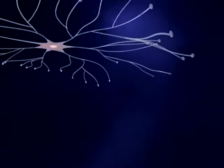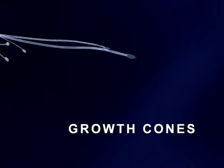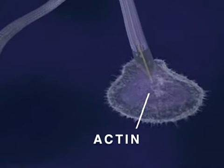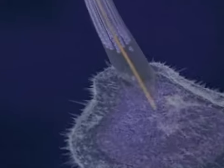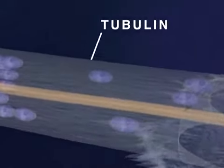At the end of each neurite is a growth cone where structural proteins are assembled to form the cell membrane. Two principal proteins involved in growth cone function are actin, which is responsible for the pulsating motion seen here, and tubulin, a major structural component of the neurite membrane.